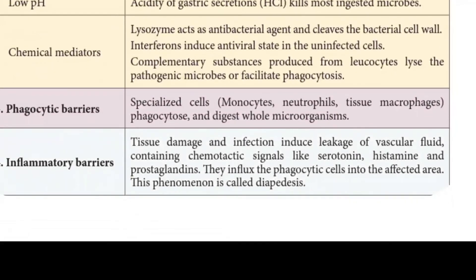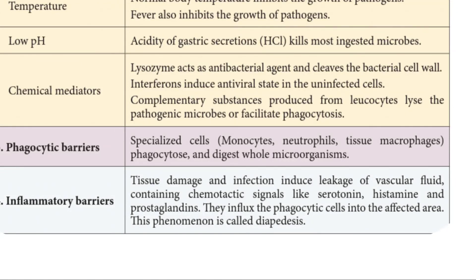The next one is the inflammatory barrier. Tissue damage and infection induce leakage of vascular fluid containing chemotactic signals like serotonin, histamine, and prostaglandins. If there is any damage or infection in a wound, it causes inflammation in that particular portion. This influx of phagocytic cells into the affected area is called diapedesis.